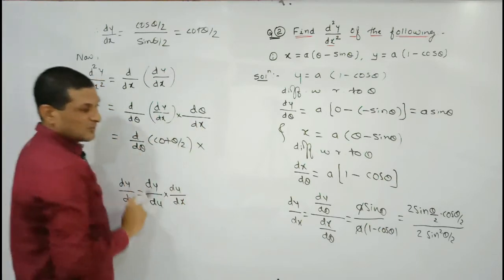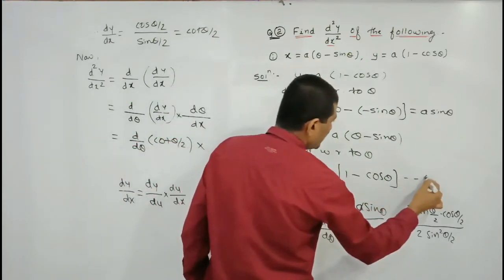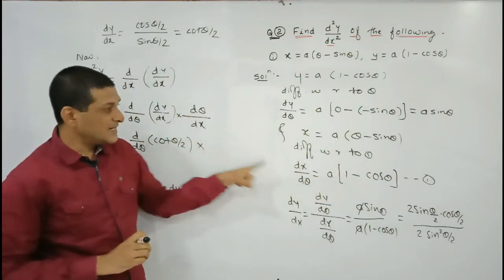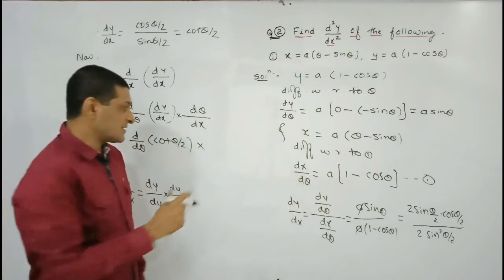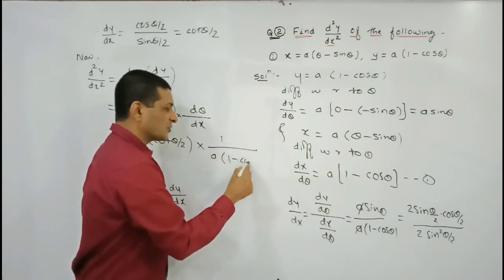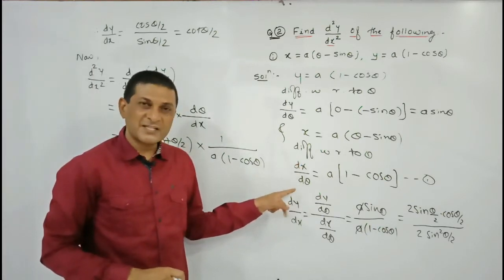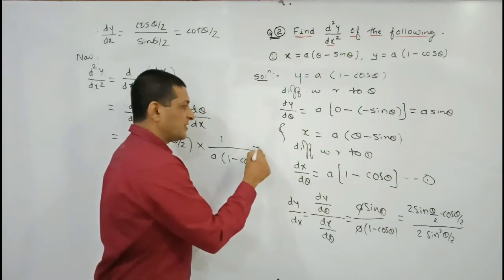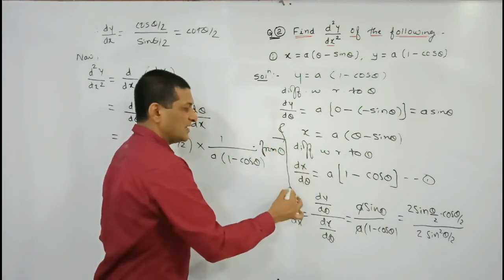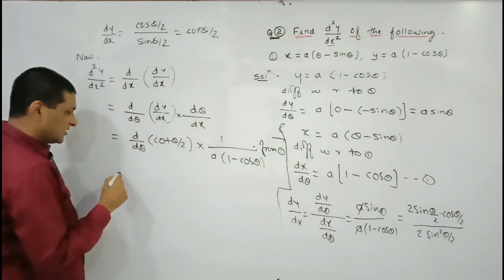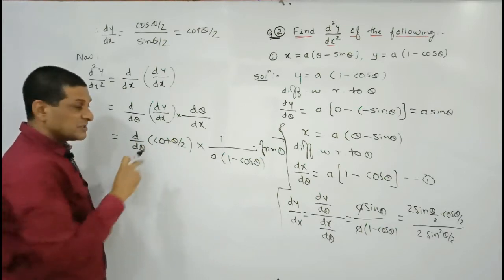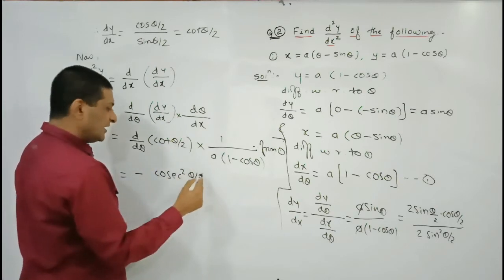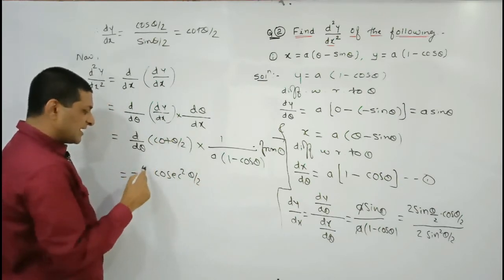The value of dx/dθ = a(1 - cosθ), which we denote as equation one. We do not require dx/dθ directly; we require dθ/dx, which is its reciprocal: 1 / [a(1 - cosθ)]. Now we differentiate cot(θ/2) with respect to θ. The derivative of cot(f(x)) is -cosec²(f(x)) · f'(x), so derivative of cot(θ/2) is -cosec²(θ/2) · (1/2).